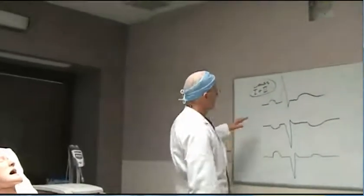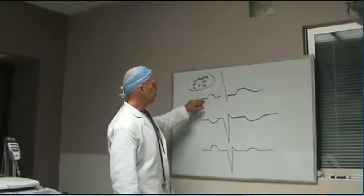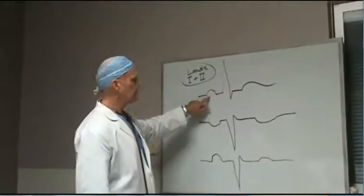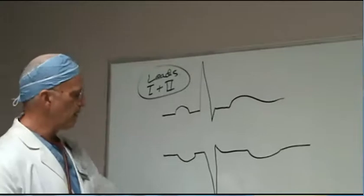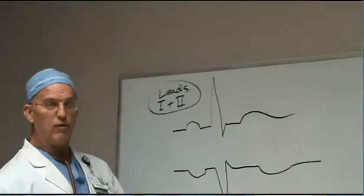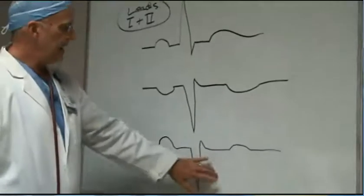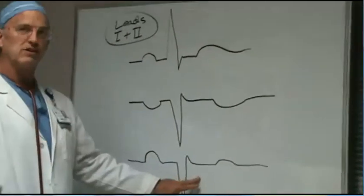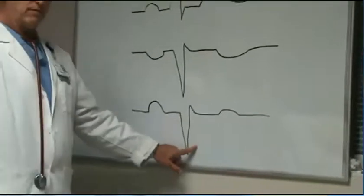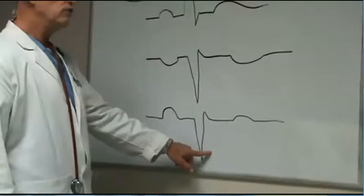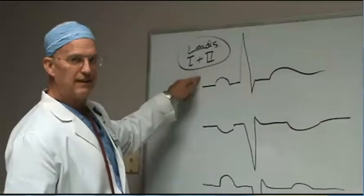This is a normal lead 1 or 2. Always look at leads 1 and 2 when you get done and make sure that the QRS is upright and that the P wave is upright. There are some people whose QRS is reversed — maybe they have a strong right axis deviation or maybe they've had an infarct in the lateral wall. How can you tell whether you've reversed the limb leads or whether they just have a true abnormality? Look at the P wave. If the P wave is upright and the QRS is down, then you've done it right — the patient just has an abnormal electrocardiogram. But if everything is upside down in leads 1 and 2, you've reversed your limb leads.